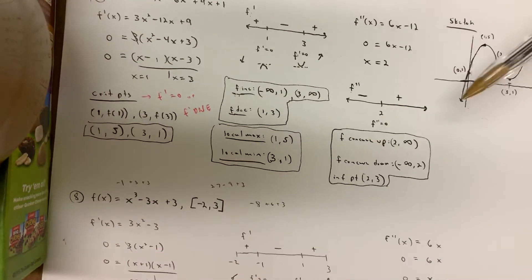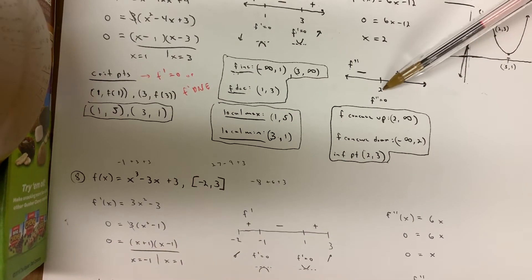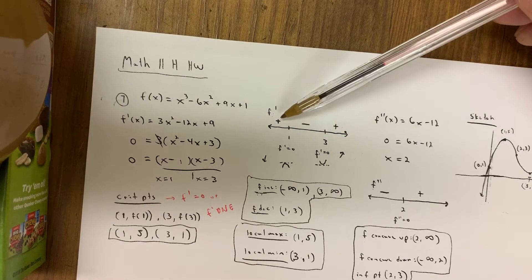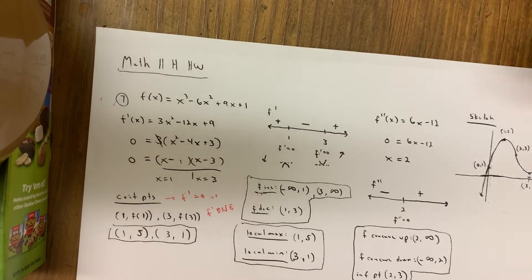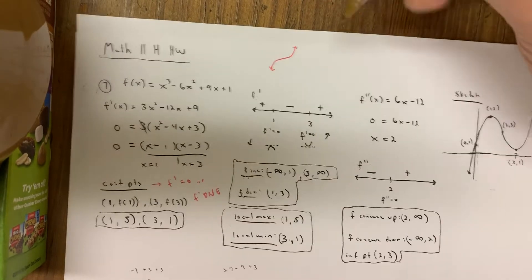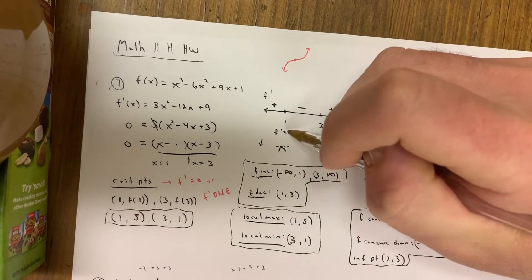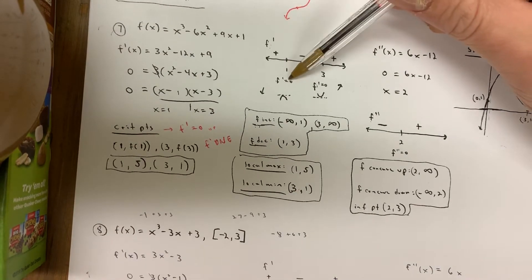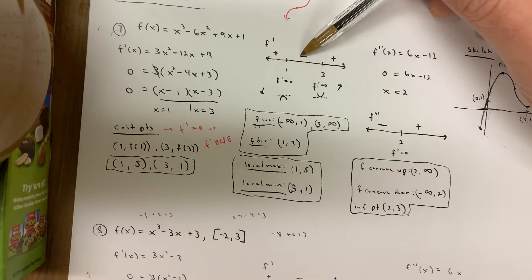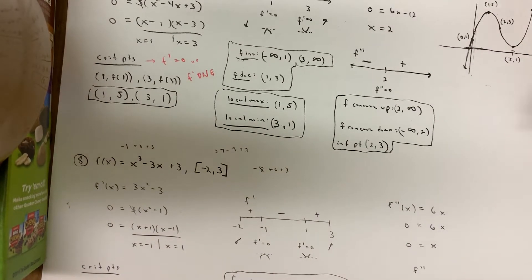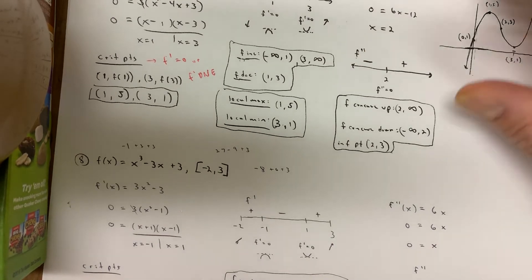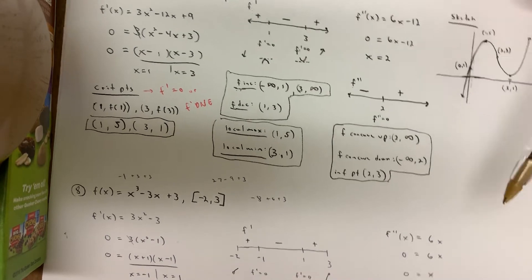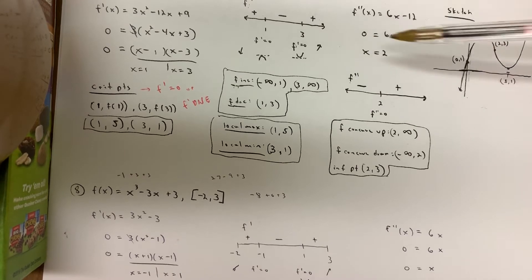For inflection points, f double prime — the second derivative — has to be equal to zero or non-existent, but there also needs to be a sign change. On the f prime line, a function can go from increasing to increasing again without a sign change. For a critical point, f prime equals zero or non-existent — you don't need a sign change. But for an inflection point, you always need a sign change on the f double prime line. Any type of point, plug back into the original.